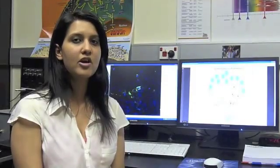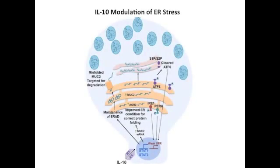Overall, in this paper, we've shown that IL-10 via the R1 receptor induces the transcription of STAT1 and STAT3, which results in the induction of Muc2 mRNA. It also increases the expression of ER resident chaperones, such as AGR2, which can improve the ER condition, allowing correct protein folding, while maintaining the ER-associated degradation pathway, where Muc2 which is misfolded can be targeted for degradation. Therefore, IL-10, even under adverse conditions, allows the continued production of Muc2, which is a critical component of the intestinal barrier.